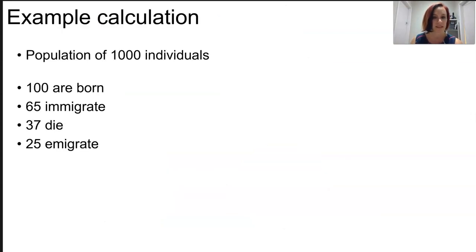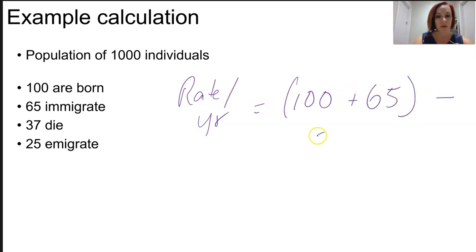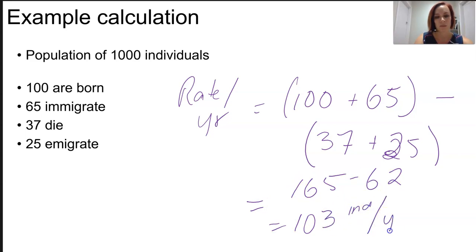If we do an example of this, let's talk about a population of a thousand individuals where a hundred are born in that year, 65 immigrate in, 37 die and 25 emigrate. Our growth rate per year is going to equal the 100 that are born plus 65 that immigrate, take away the 37 who die plus the 25 that emigrate. We get 165 take 62, which is 103 individual organisms per year. If this is a positive number, it does mean that we are increasing in population.